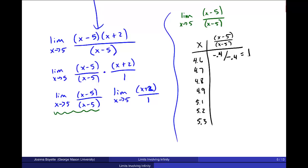When I plug in 4.7, negative 0.3 divided by negative 0.3, and that's 1. Negative 0.2 divided by negative 0.2, and that's 1. Negative 0.1 divided by negative 0.1, that's also 1.